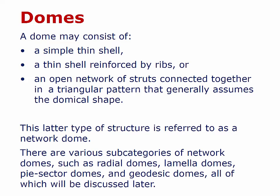A dome may consist of a simple thin shell, a thin shell reinforced by ribs, or an open network of struts connected together in a triangular pattern that generally assumes the domical shape. A strut is like a column except it's not necessarily vertical — it typically can have any orientation in space. It's very capable of resisting tension and compression, but it's usually designed to be fairly slender and structurally efficient, so it's not great as a bending member, though it can serve in that mode also.